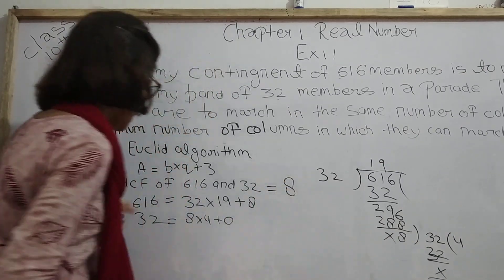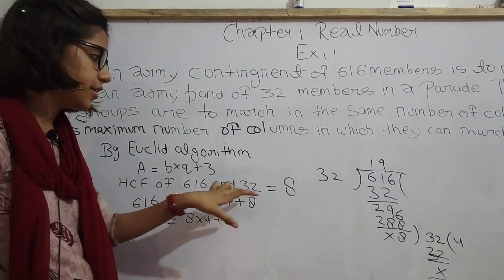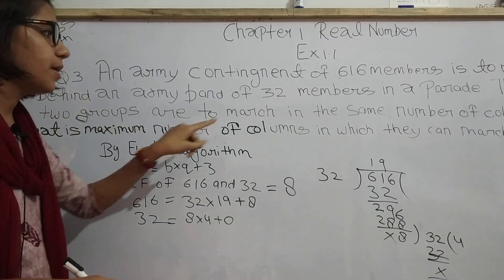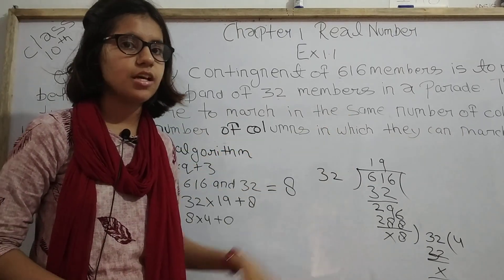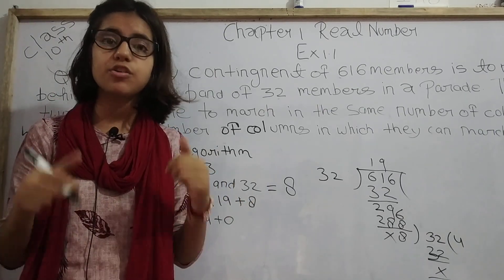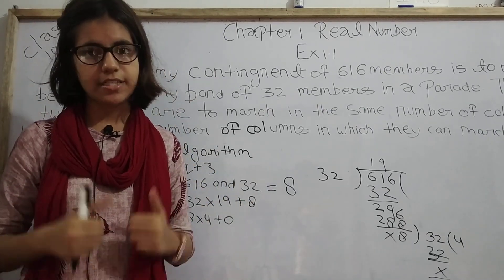HCF equals 8. The HCF of 616 and 32 is 8. So we can see that 8 is the maximum number of columns in which they can march. This was our Question Number 3. If you find this video useful, you can like and subscribe to my channel. Thank you very much.